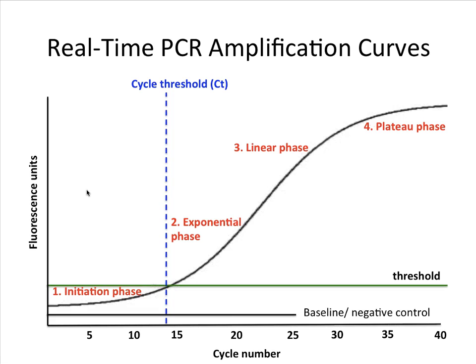On the x-axis we have the cycle number. A typical real-time PCR reaction is carried out over 40 cycles. On the y-axis we have the fluorescence units, which are increasing. There is a threshold, which you can consider to be the background threshold level — at this point you would expect to see some background fluorescence even in the absence of a true amplicon. This threshold can be set automatically by the software or manually. Underneath the threshold we have a baseline or negative control: if you have a control with no template, you should not expect to see any fluorescence, so it should always appear below the threshold.